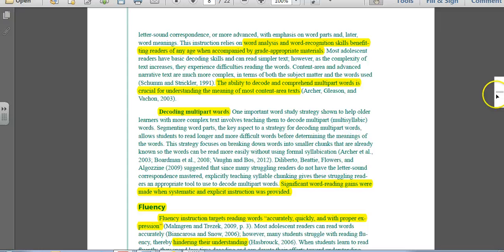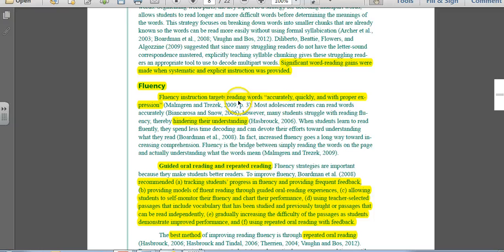The next component is fluency. Fluency targets how accurately, quickly, and with proper expression someone's reading. If they do not read accurately, quickly, and with proper expression, this hinders their understanding. One strategy you can use to improve this is by giving guided oral reading and repeated readings. I'm going to read through this. This is a chunk here that I've highlighted, but it is important. Boardman and all recommends that you want to track students' progress in fluency and provide frequent feedback. Provide models of fluent reading through guided oral reading experiences. Allow students to self-monitor their fluency and chart their performance. Use teacher-selected passages that include vocabulary that has been studied and previously taught and passages that can be read independently. And we want to gradually increase the difficulty of the passages as the students demonstrate in performance. We also want to use repeated oral reading with feedback. The best method of improving fluency is through repeated oral readings.